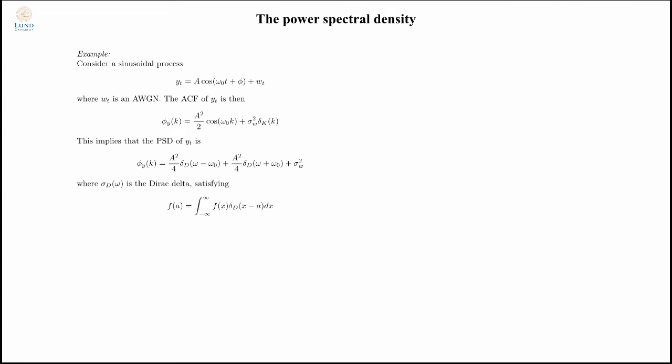If I look at the sinusoidal process that we were examining before, the autocorrelation function will have this form that I expressed previously. If I take the Fourier transform using Euler's formula, I have two Dirac impulses, one at the positive frequency and one at the negative. The power spectral density of a sinusoid will look like this, one frequency at omega zero and one at minus omega zero, with Dirac impulses at both locations.